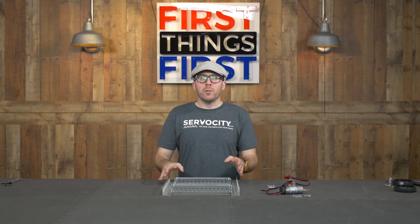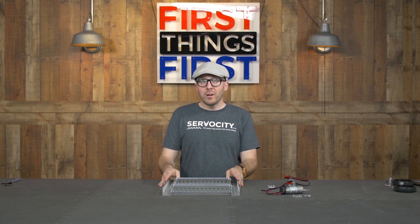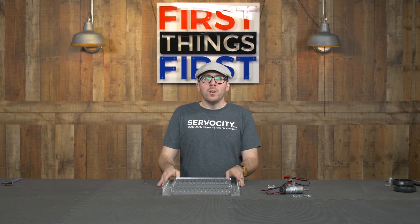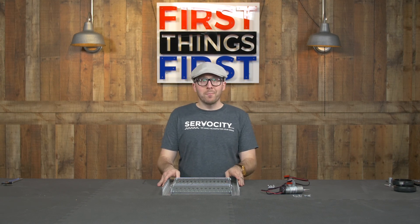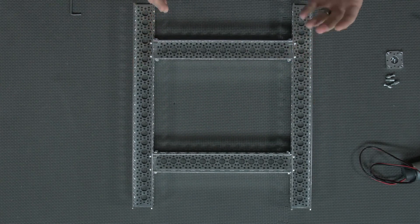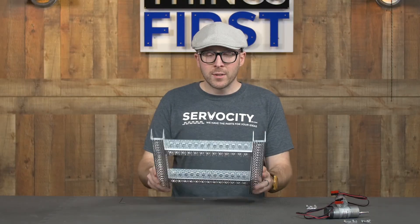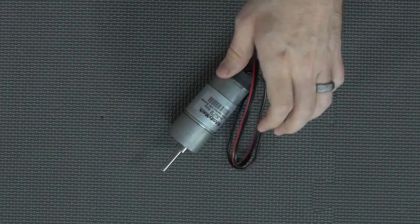In our previous videos we've built three separate robot chassis frames. In this video we're going to select one of those frames and start building upon it. I'm going to use the all-channel build because it's probably the simplest of the three. We're going to be mounting some motors to it.